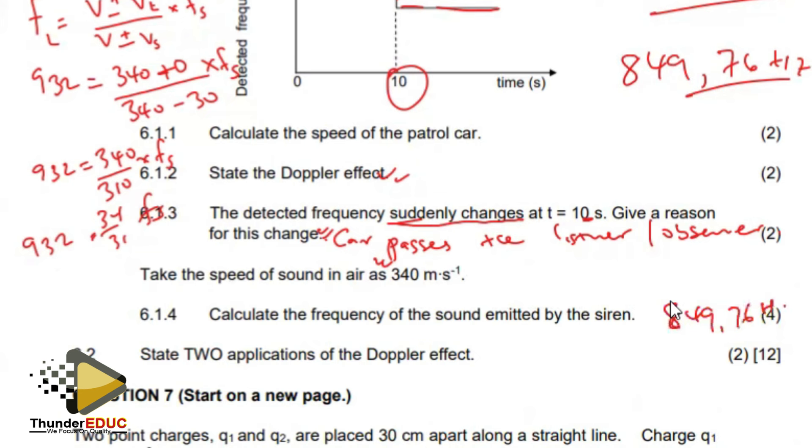State two applications of Doppler effect. Remember we said the speed, it can be used in the Doppler flow meter, that meter that is used to measure the heartbeats of the fetuses and all of that.